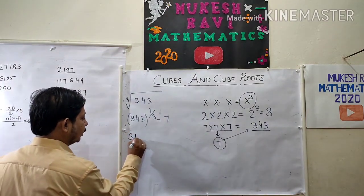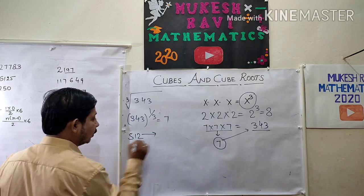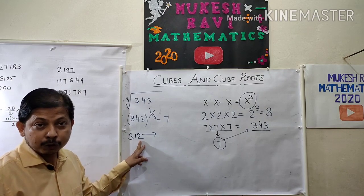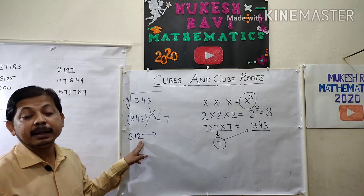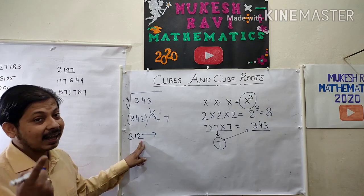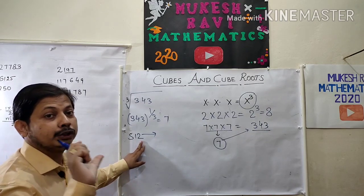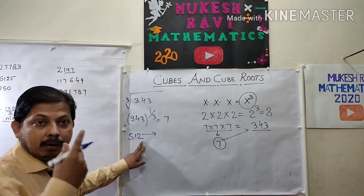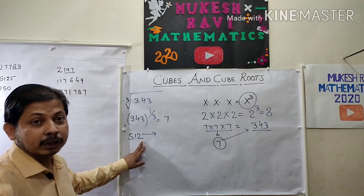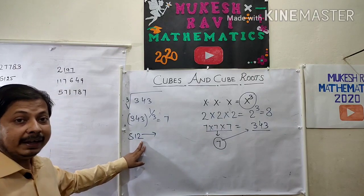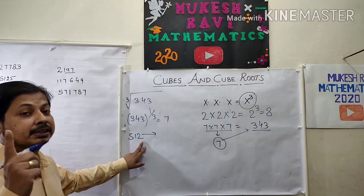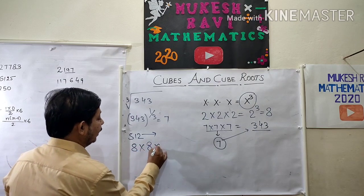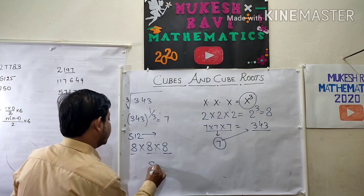For example, 512. The number 512 ends with the digit 2. So the cube root of 512 may end with 8, because if a cube of a number ends with 2, the unit digit of the cube root is 8. Therefore the cube root of 512 has unit digit 8. Since 512 is already 8 × 8 × 8, this is a triplet, so the cube root of 512 is 8.